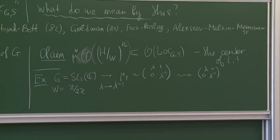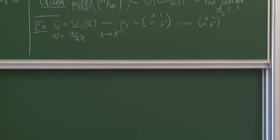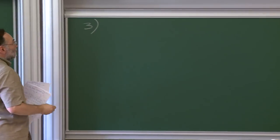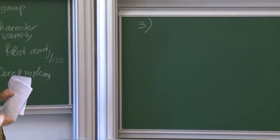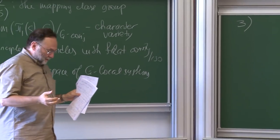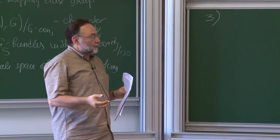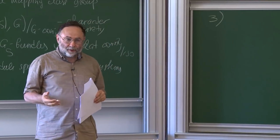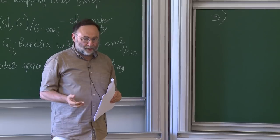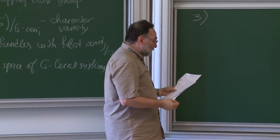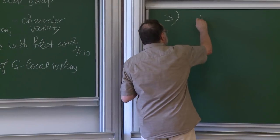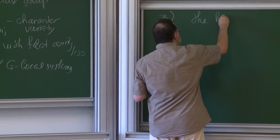The next equally important piece of data: when we quantize an algebraic variety, we usually think of it as complex. But when we come to quantization, we think about some real part of this algebraic variety. And so, what is the real part? This is the higher Teichmüller space.